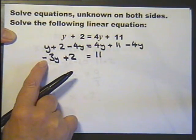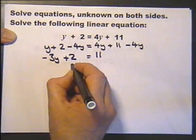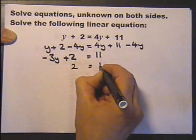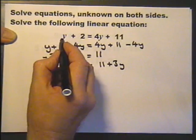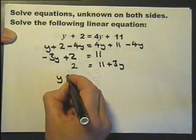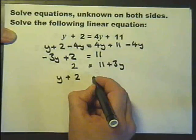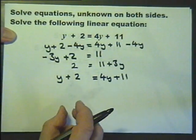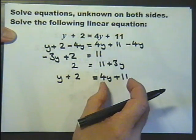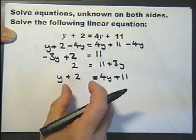So the first thing I'll now do is add 3y to both sides. Now although that approach, there's nothing wrong with it, just maybe a different approach would have been better. So let's write down the question again. And this time I'll consider collecting all the y information on the right hand side rather than the left hand side.